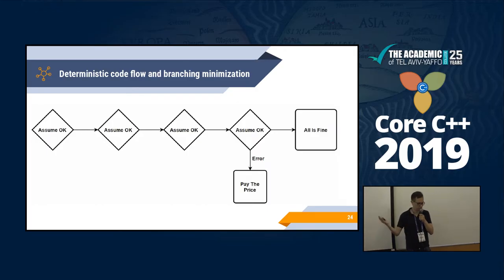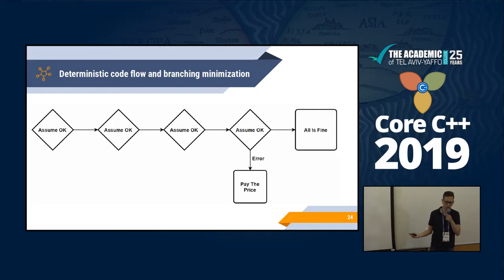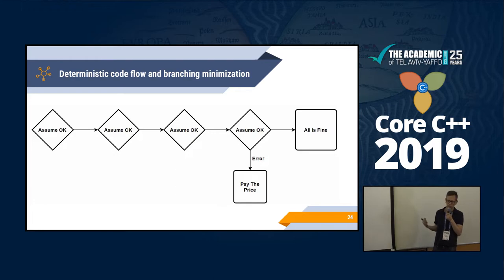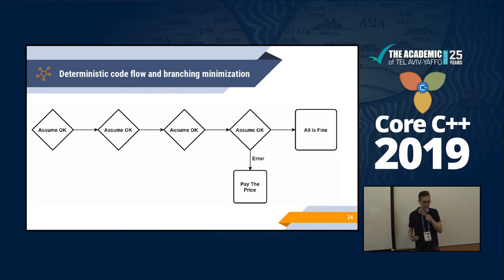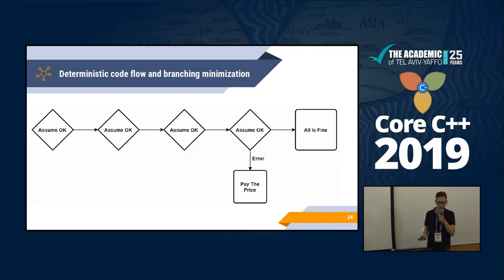Of course you can't skip every check — we have risk checks and compliance checks that ensure we don't lose too much money and that we follow regulations and the law. Not doing those checks is very dangerous and can be against the law. That means our risk and compliance infrastructure is one of the most branched areas in our real-time flow, which is pretty unfortunate, but we can't completely avoid it.